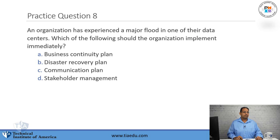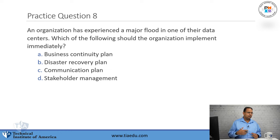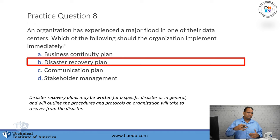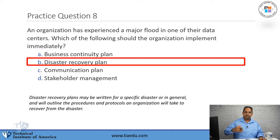Practice question number eight: An organization has experienced a major flood in one of their data centers. Which of the following should the organization implement immediately? A, business continuity plan. B, disaster recovery plan. C, communication plan. D, stakeholder management. The answer is the disaster recovery plan. A disaster recovery plan is generally written for a specific disaster, and the moment there's some kind of disaster, you implement that plan to determine how you're going to bring operations back up.